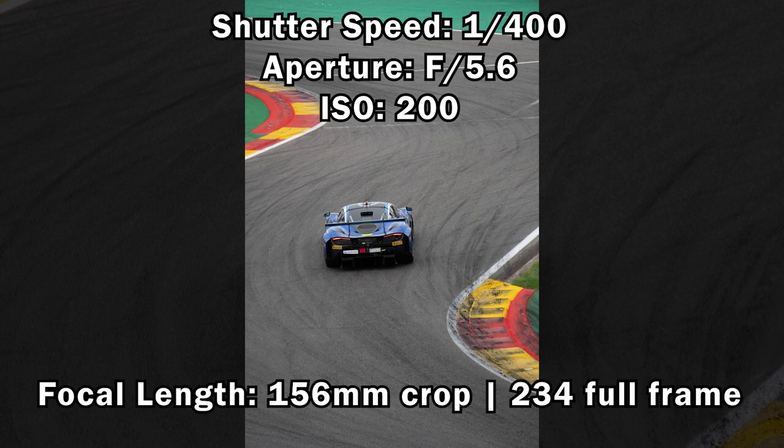These are the settings I used. I chose a shutter speed of 1/400 to freeze the background, then went with a minimum aperture, and changed the ISO to 200 to get a bit more exposure. The focal length is basically the camera zoom.